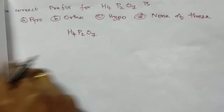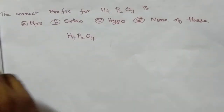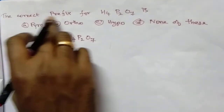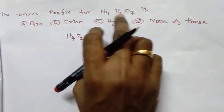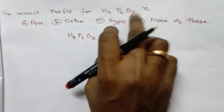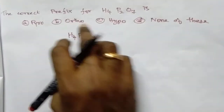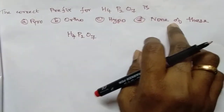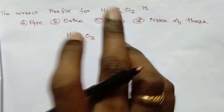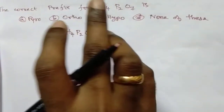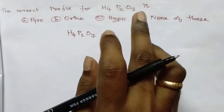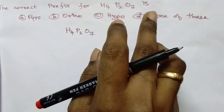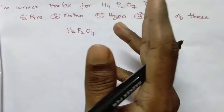I begin with a question. The correct prefix for H4P2O7 is: pyro, ortho, hypo, or none of these? If you know the name of phosphorus oxo acids, you can answer, isn't it? Is there any other way?